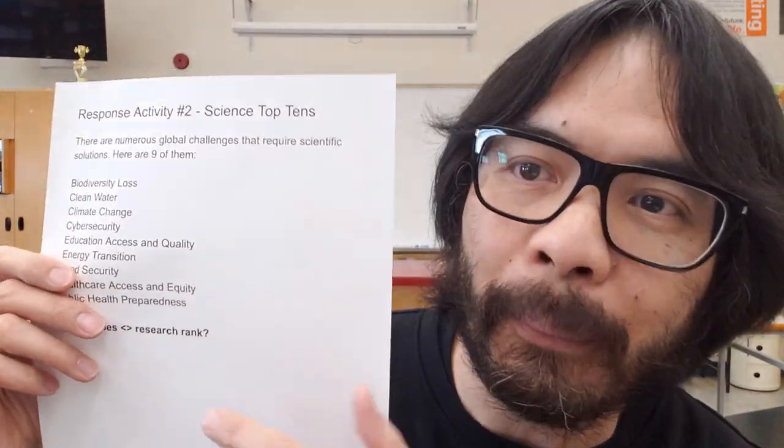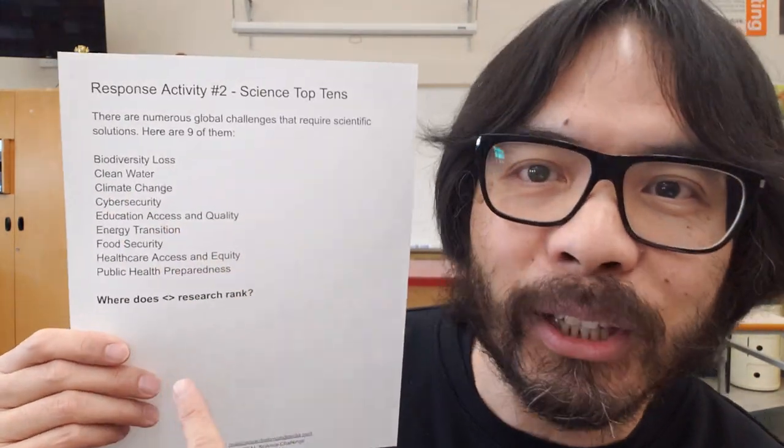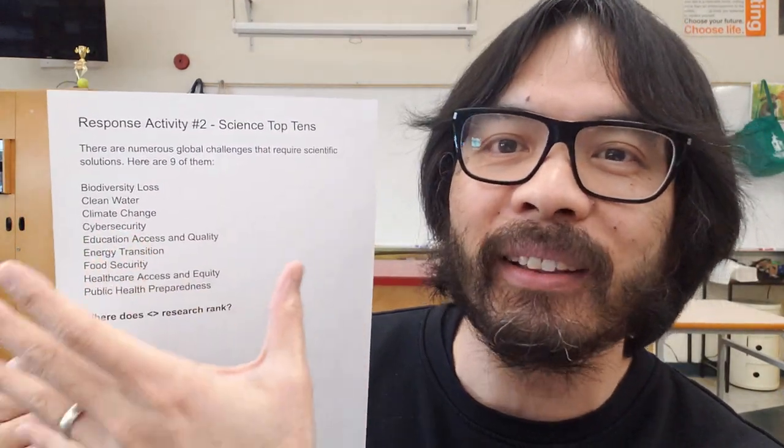Strategy number two — I just came up with this one and I like to call it Top Tens. I use this with classes after we watch a science news video. For example, we just watched one on CRISPR and how it's being used to cure sickle cell disease. After the video, I show students a list of top tens — well, here there are nine topics — which are issues that science is trying to solve.